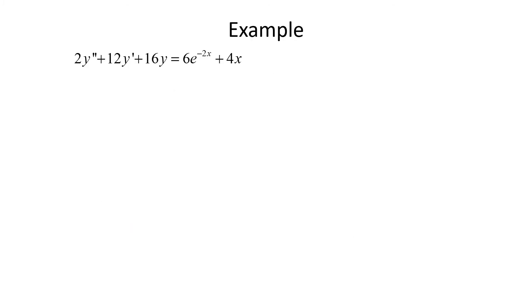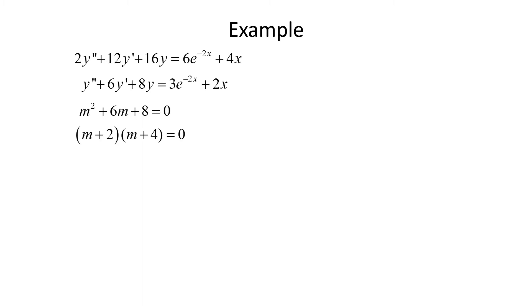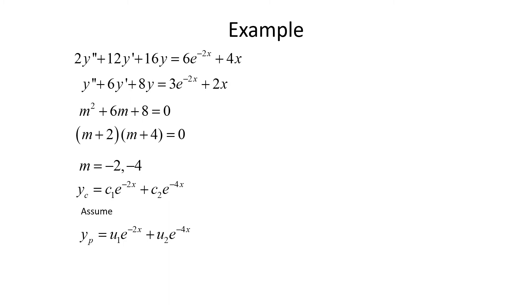Let's look at another example. This time we want to solve 2y'' + 12y' + 16y = 6e^(-2x) + 4x. To use Variation of Parameters we need standard form, so we divide everything by 2: y'' + 6y' + 8y = 3e^(-2x) + 2x. We start by finding the complementary function. Our auxiliary equation is m² + 6m + 8 = 0, which factors as (m + 2)(m + 4) = 0, giving m = -2 and m = -4. So yc = c1·e^(-2x) + c2·e^(-4x).